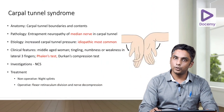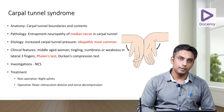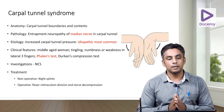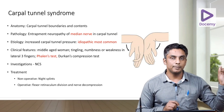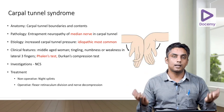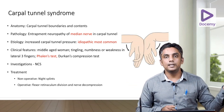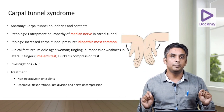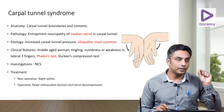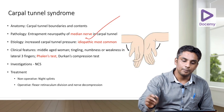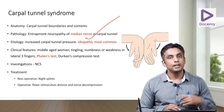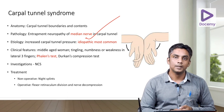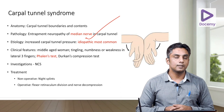Carpal tunnel syndrome is a very important short note and practical question. It is a compressive or entrapment neuropathy of the median nerve in the carpal tunnel. When writing a short note, mention the anatomy: the floor is formed by the carpal bones and the roof by the flexor retinaculum (transverse carpal ligament). Etiology is commonly idiopathic, but anything increasing pressure inside the tunnel — swelling, edema, wrist fractures, ganglion, tenosynovitis — can cause it.